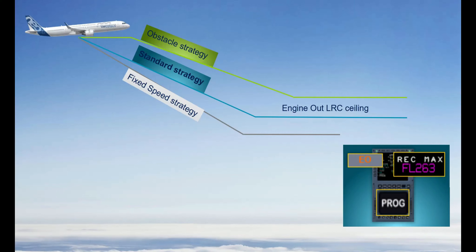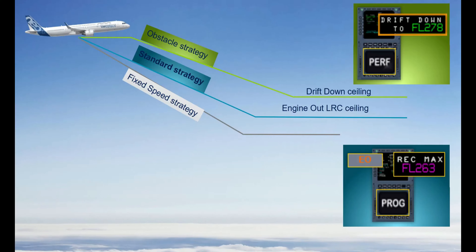The rack max for one engine out on the PROC or PERF page, depending on the aircraft type, is the long-range cruise LRC ceiling with one engine inoperative — it corresponds to the standard strategy at long-range cruise speed. The drift down ceiling on the PERF page corresponds to the obstacle strategy at green dot speed. Or the flight level for the selected ETOPS diversion speed corresponds to the fixed speed strategy.